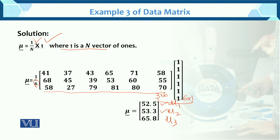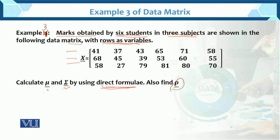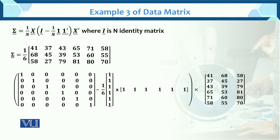Now for the variance-covariance matrix, the direct formula is: Sigma = (1/n) · X · [I − (1/n) · 1 · 1ᵀ] · Xᵀ. Here n = 6, X is given, and we need the identity matrix. We have 3 variables and 6 objects.